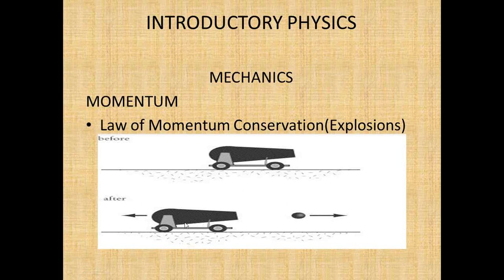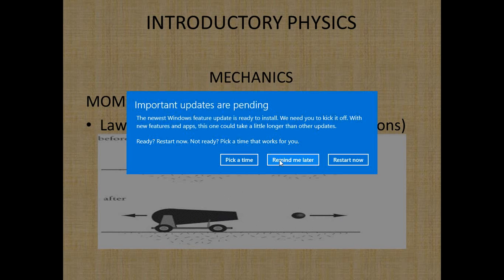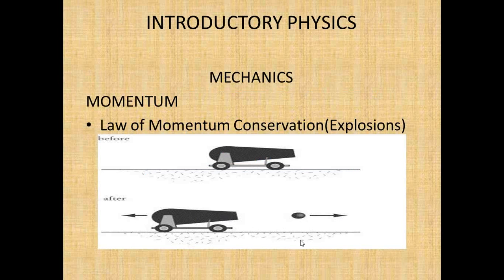The bullet travels forward at tremendous speed and the cannon has a recoil — it moves backwards. Because the bullet is much smaller than the cannon, the bullet will have a much greater speed than the cannon. The cannon recoils back somewhat, but not tremendously, because it has a much greater mass than the bullet. Remember, momentum is mass times velocity. The forward momentum is equal in magnitude but opposite in direction to the backward momentum or recoil.